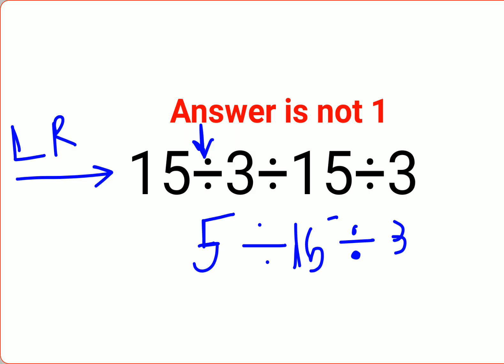So now when you have division, you need to realize that 5 divided by 15 is 1 upon 3. Okay, sorry, I'll just write it on the other side. 1 upon 3 divided by 3. Okay.